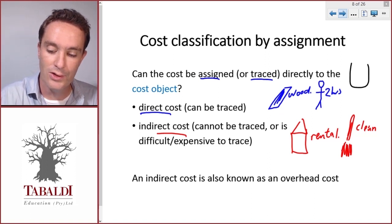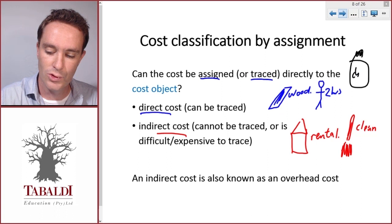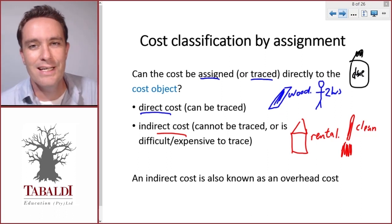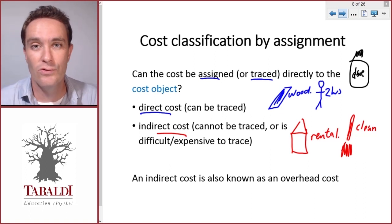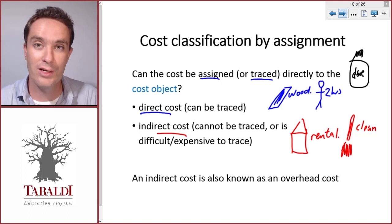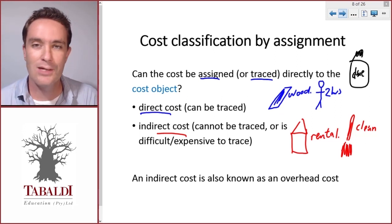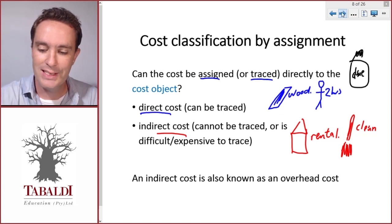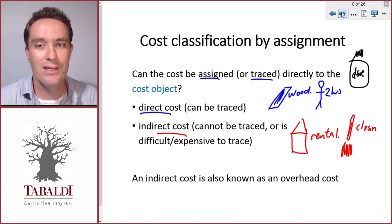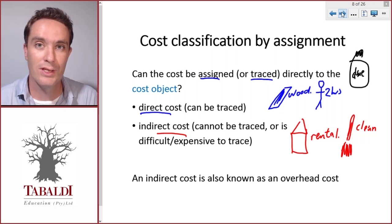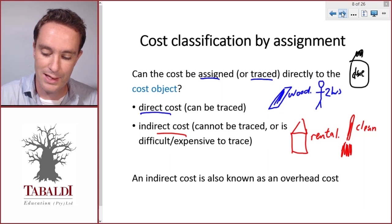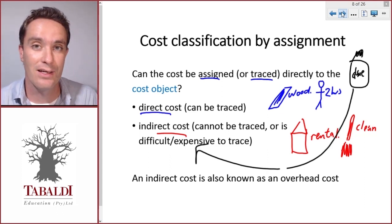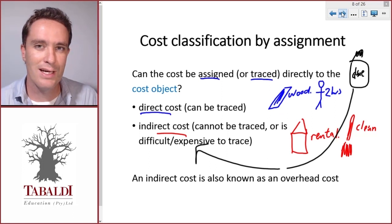Some costs are somewhere in between. An example is the glue we use to join the wood — technically it's possible to measure the glue for each table, but it's going to take a lot of effort and time, and we might even waste some glue in doing that. So it's impractical and very difficult to trace the cost of the glue to each table, and in that case we classify it as an indirect cost.